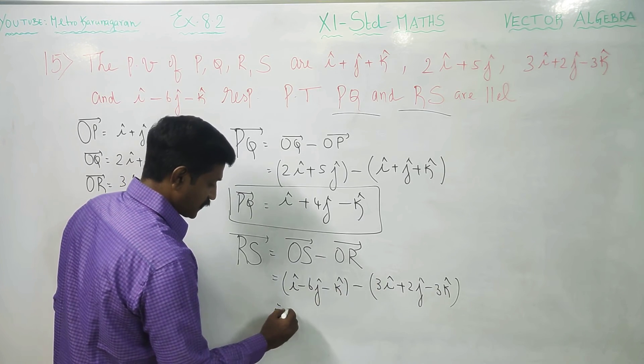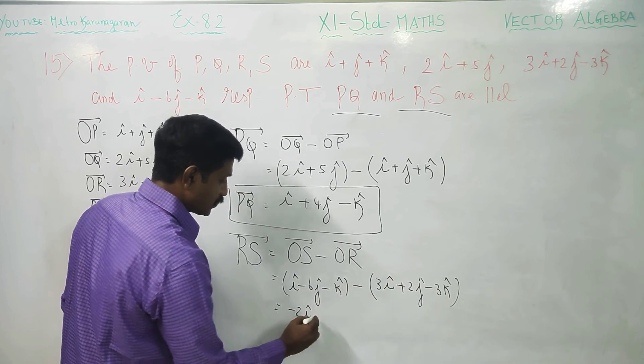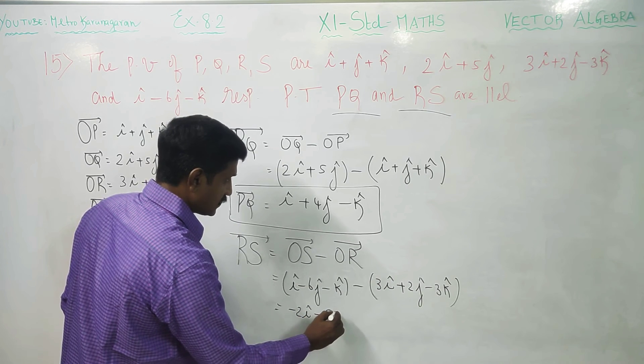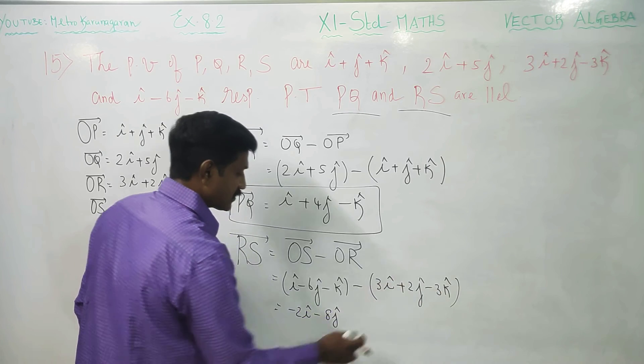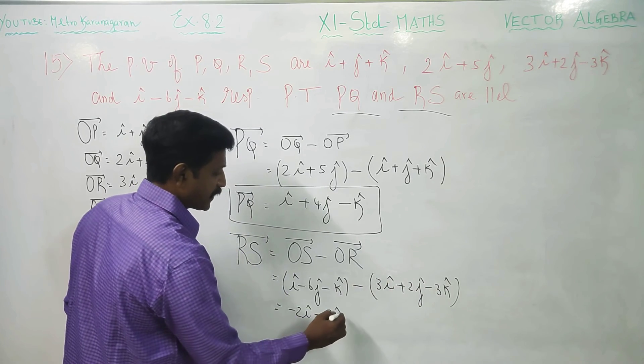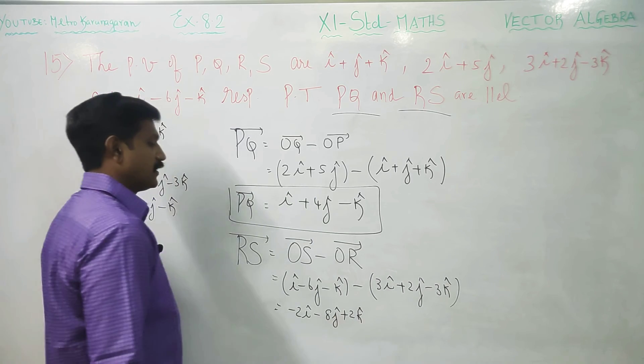1 minus of 3 is minus 2I vector. Minus 6 minus 2 becomes minus 8J vector. Minus K minus 3K. This becomes plus 3K. Therefore, plus 2K vector.